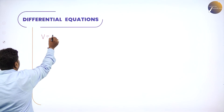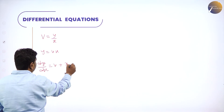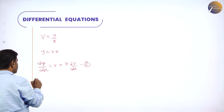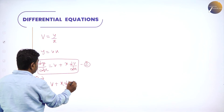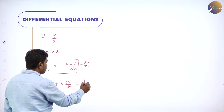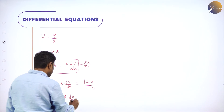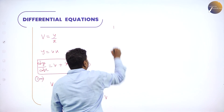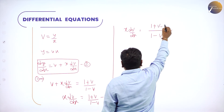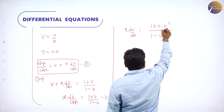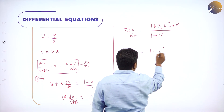Put v = y/x, so y = vx. Differentiate: dy/dx = v + x·dv/dx (equation 2). Substituting into equation 1: v + x·dv/dx = (1 + v)/(1 − v). Transfer v: x·dv/dx = (1 + v)/(1 − v) − v. Taking LCM over (1 − v): numerator is 1 + v − v(1 − v) = 1 + v² . So x·dv/dx = (1 + v²)/(1 − v).